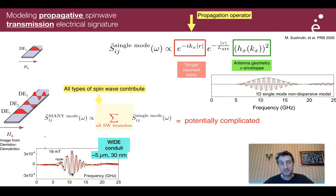But in practice, sometimes we have several spin waves that contribute to the system, such that the resulting transmission coefficient is a sum, a complicated sum over many spin wave branches that is potentially complicated.